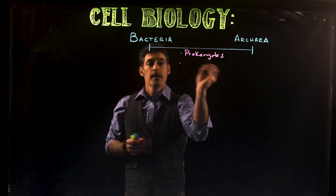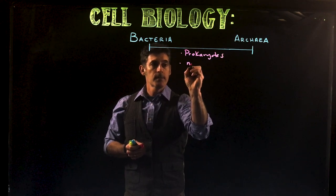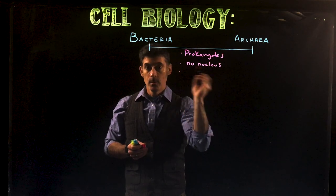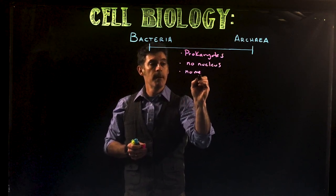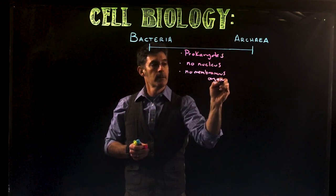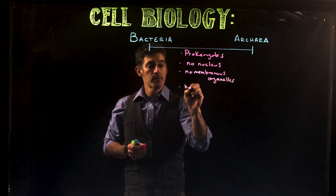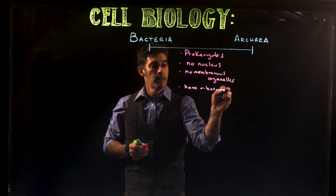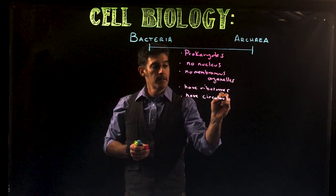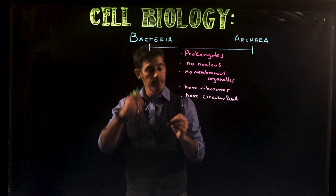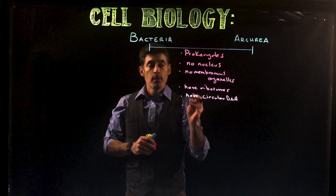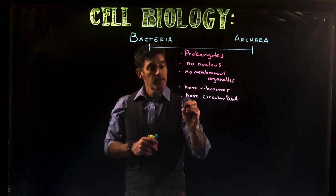They're both prokaryotes, which means neither one has a nucleus. Neither one has organelles that are made up of membranes, so no membranous organelles. They both have ribosomes. They both have circular DNA. So these are all things that they have in common. They both divide, the cells divide through binary fission.